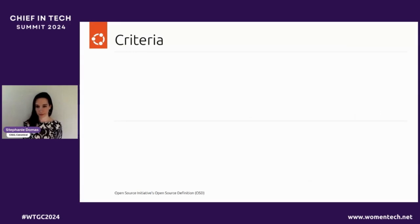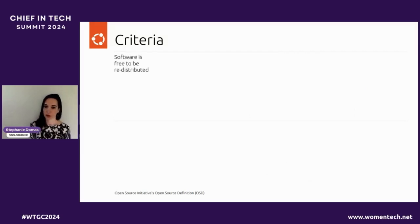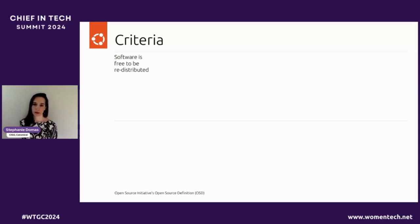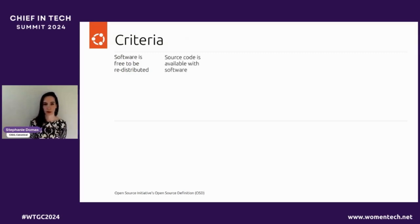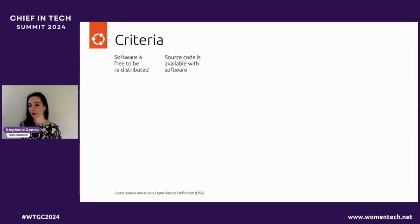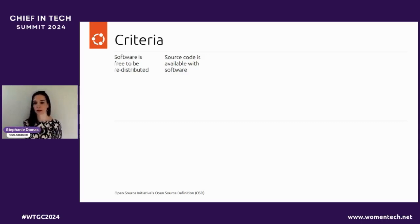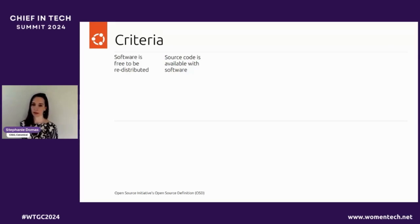More specifically, there are some criteria to officially be considered open source. The software must be free to be redistributed. One of the tenets of open source is creativity and empowerment for any and everyone, so the software must be free. Anyone can leverage and utilize open source. The source is available with software — if you build open source software, the source code needs to be available so someone running your software has the ability to look. Transparency is a huge tenet of open source.